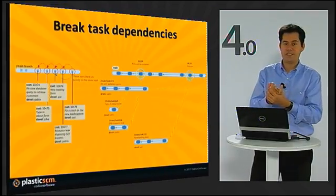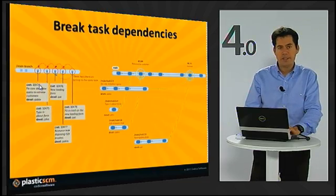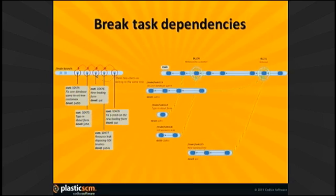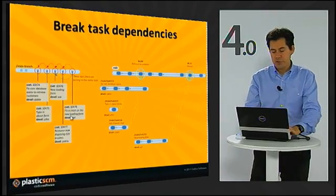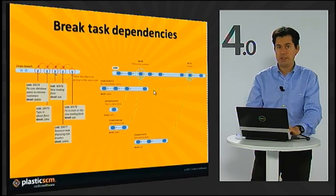Then there's breaking task dependencies. You make a check-in fixing a core database thing, and then the next check-in is about a change in the about form. The level of risk is really different and they are not tied — but if you check in one and then the other, they are already linked because of the SCM, not because of the tasks. If you split them into different branches, you have the freedom to integrate them independently. They can evolve independently — it's really a different way of working.